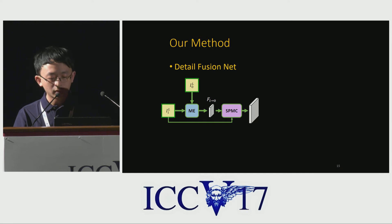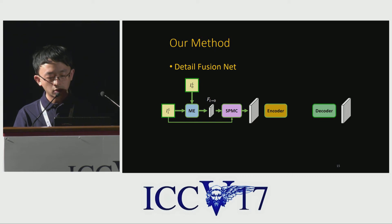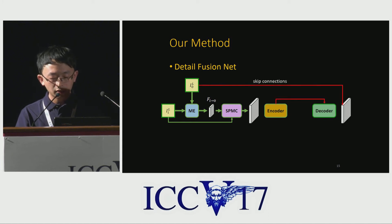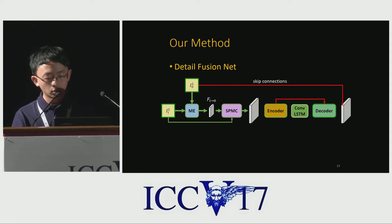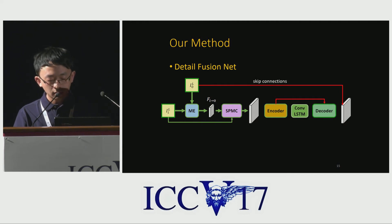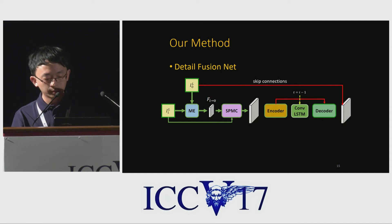In the last stage, we designed a detailed fusion network to combine all the frames. We use an encoder-decoder structure in this module, since it is proved very effective in image regression tasks. Skip connections are used for better convergence. Importantly, we insert a conv LSTM inside this network — a natural choice since we are handling sequential inputs and hoping to utilize temporal information. This conv LSTM considers information from the previous time step and passes the hidden state to the next time step.